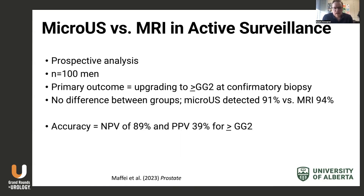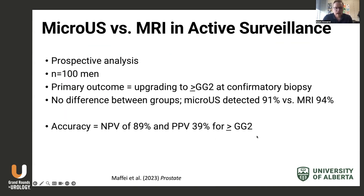There has been another study — this one prospective — out of Humanitas University in Italy, looking at 100 men, with the primary outcome again being upgrading to Gleason grade group 2 at confirmatory biopsy. They again found no difference between groups, with micro-ultrasound detecting 91% of upgrades and MRI detecting 94% of upgrades. In terms of accuracy, they found similar results with a negative predictive value of 89% and a positive predictive value of 39% for upgrading to grade group 2 or higher.